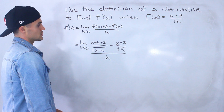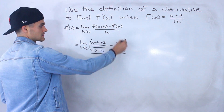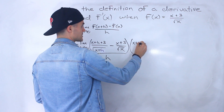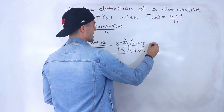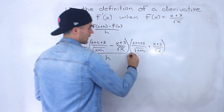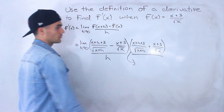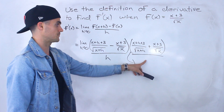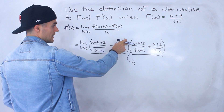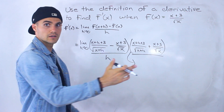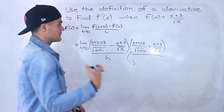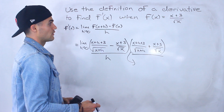What would happen is you would have to rationalize this numerator, so you'd have to multiply by x plus h plus 3 over the square root of x plus h, plus x plus 3 over the square root of x. If we multiply the numerator by that, we'd also have to multiply the denominator by that same term. We'd have x plus h plus 3 squared minus x plus 3 squared, they won't have common denominators, and we're going to have to combine them and multiply by even more stuff. It's just going to be a lot of algebra to do it this way.